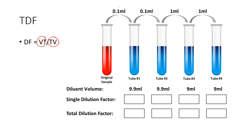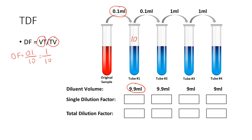So here, if we transfer 0.1 mils of this sample or culture into a tube that contains 9.9 mils of diluent, then we have a total volume of 10 mils in this tube. Total volume of 10 mils and we transferred 0.1 mils — that would be 0.1 mils over 10 mils, which is equivalent to 1 over 100.